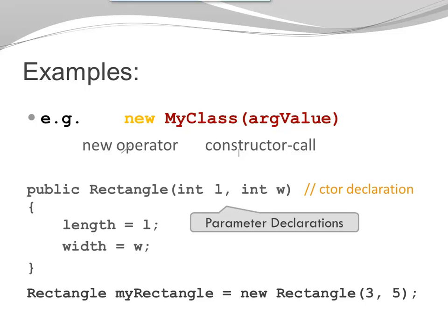Here is an example how you can do that. I'm creating a new instance of rectangle with my new operator and with my constructor call. I'm passing 3 and 5 as arguments to my constructor. And I'm assigning the newly created object to a variable called myRectangle. And this variable is of type rectangle because it includes a reference to a rectangle object, so an instance of type rectangle.